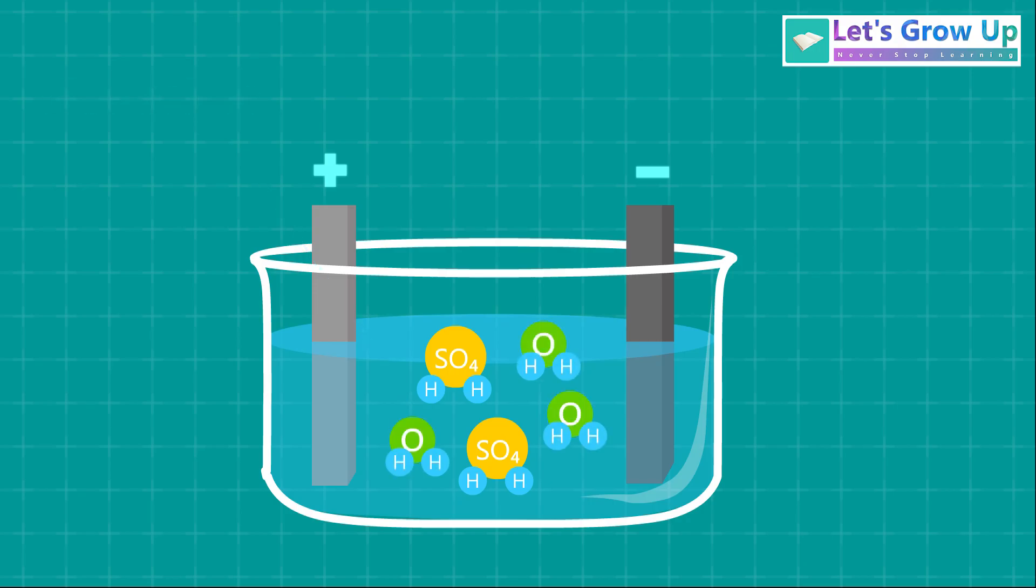Here, the positive plate is coated with lead dioxide, PbO2, and the negative plate is coated with spongy lead, Pb, when the battery is providing power.